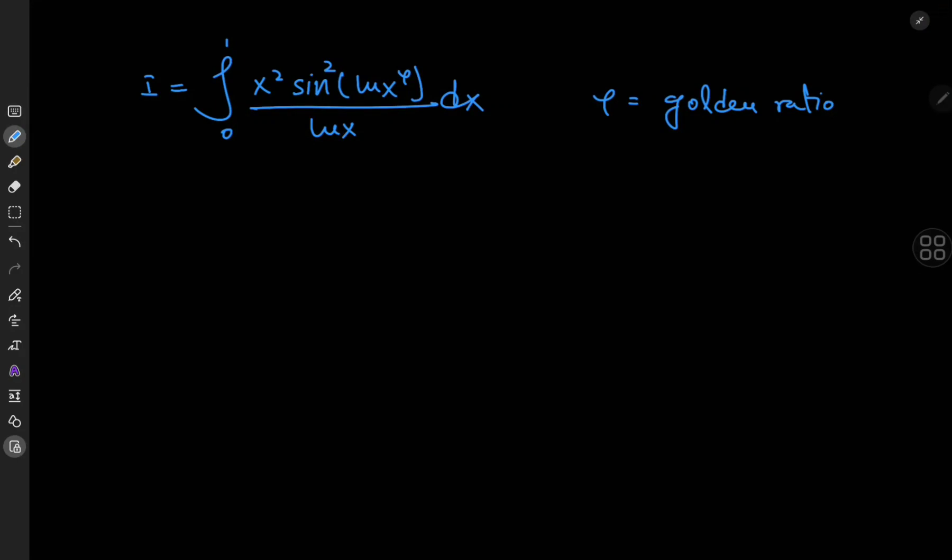Greetings fellow calculus addicts. It's been about three days since we last solved an over-the-top integral, and yes that is quite a long time indeed. So to get our fix we're going to be integrating from 0 to 1, x squared times the squared sine of the natural logarithm of x to the phi, where phi is of course the golden ratio, divided by the natural logarithm of x. Yeah that is one hell of an integral.